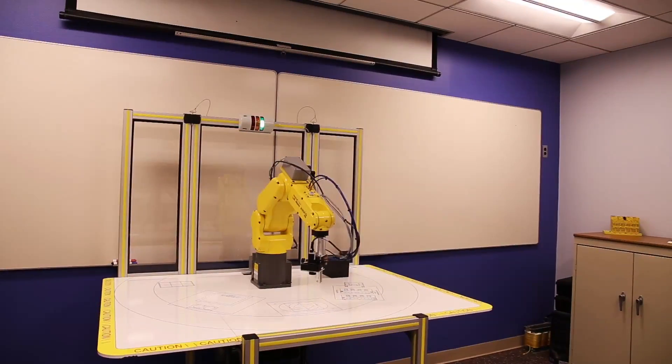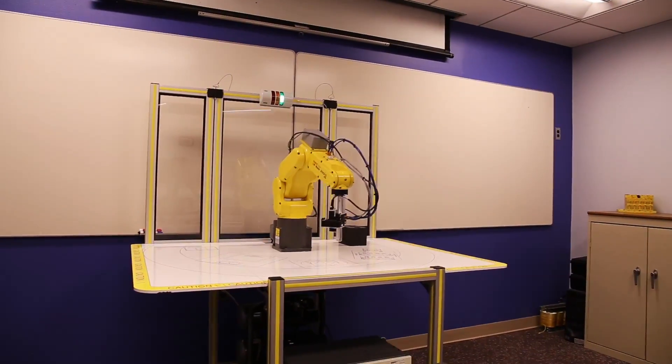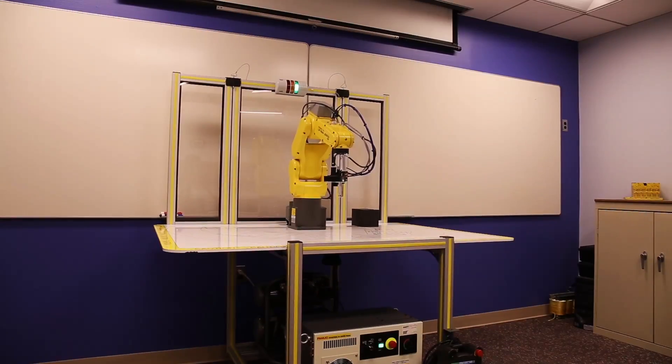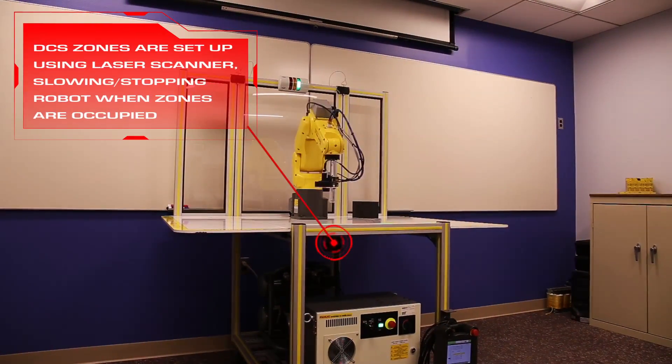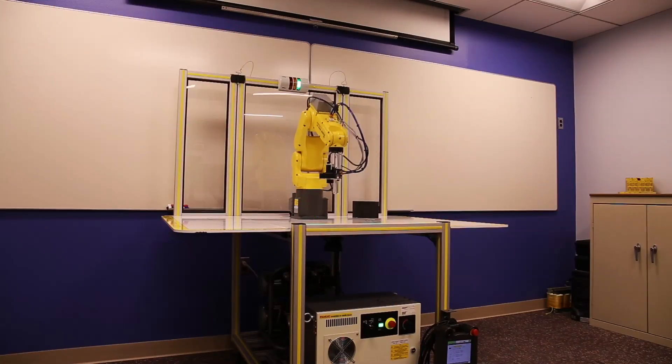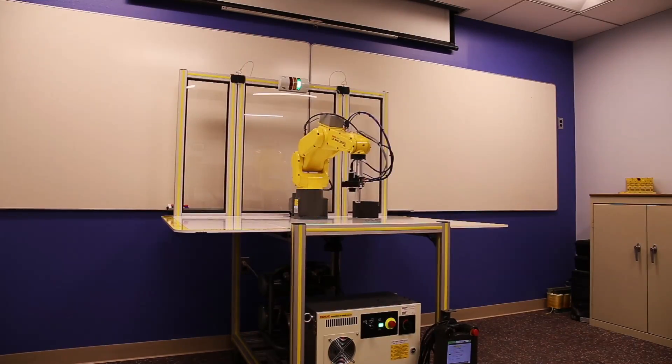The FANUC LR Mate operates with no safety fences surrounding it. Instead, Dual Check Safety or DCS Zones are set up using a laser scanner. These slow and stop the robot when zones are occupied.